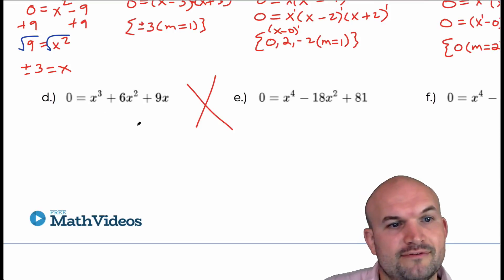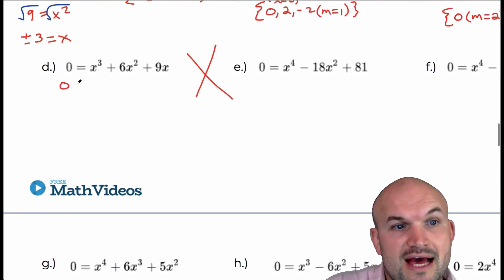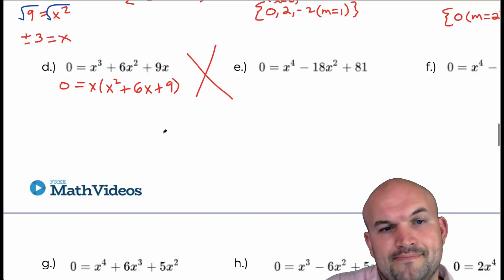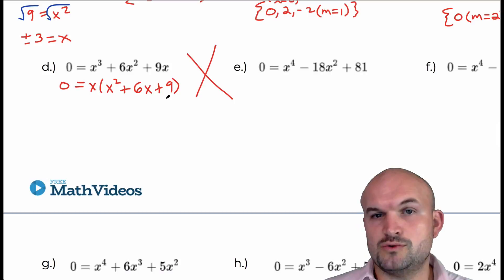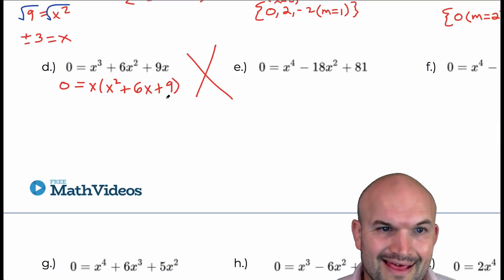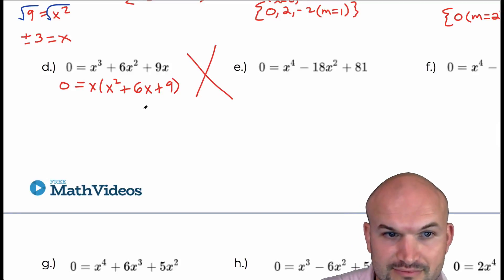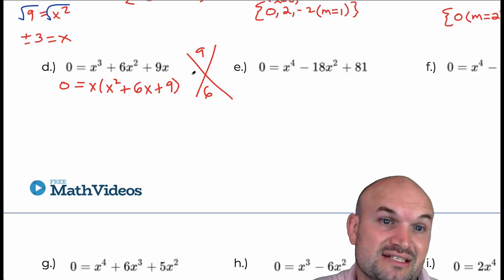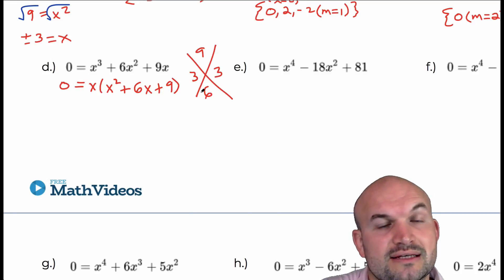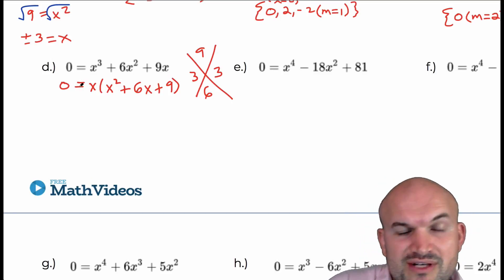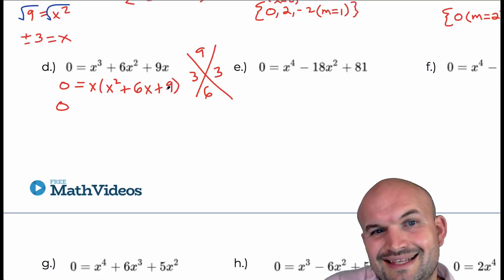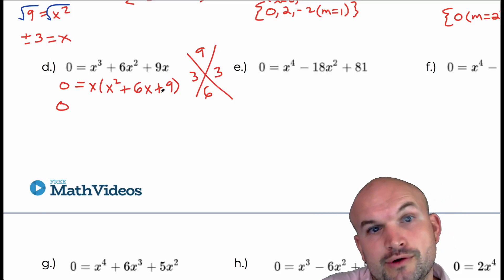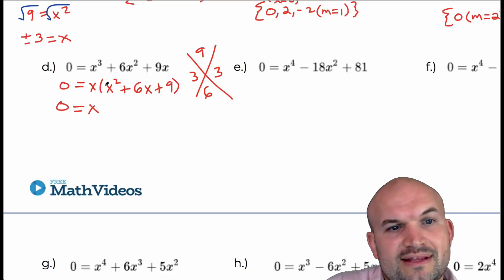In this example, all terms share an x, so I factor out a common x first, leaving x² + 6x + 9. Just like with the difference of two squares, when looking at trinomials you want to look for perfect square trinomials. We need two numbers that multiply to give 9 and add to give 6 — that's 3 and 3, since 3×3 = 9 and 3+3 = 6. This is a perfect square trinomial.